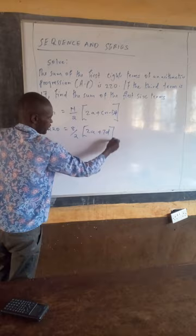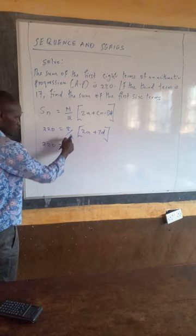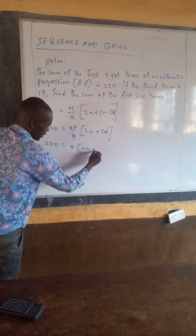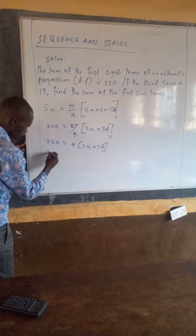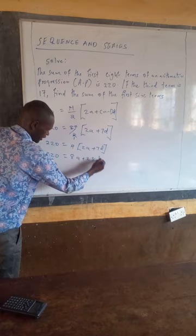After this, we shall say 220 is equal to — 8 divided by 2 gives us 4 — so it becomes 4 times 2A plus 7D. When we open that bracket, it becomes 220 is equal to 8A plus 28D. This becomes our first equation.